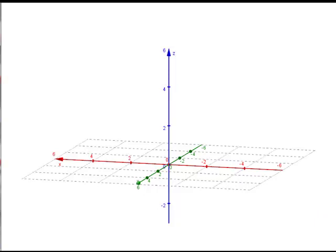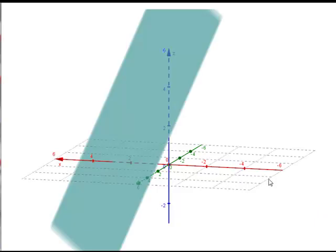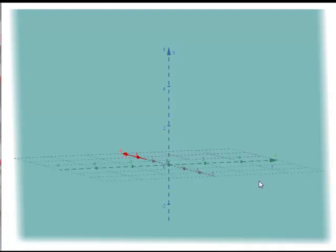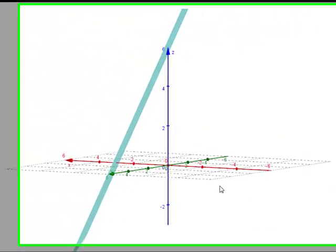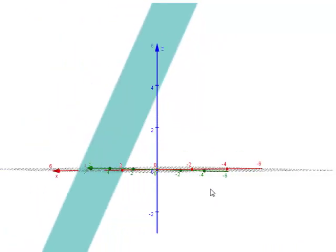So first let's plot our first equation. It makes a plane like this. You see it's got a little bit of a slant there, and it's this blue plane.